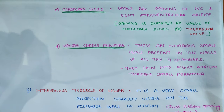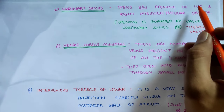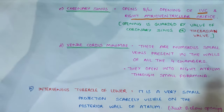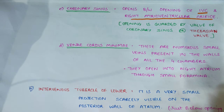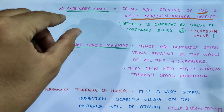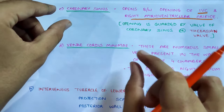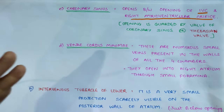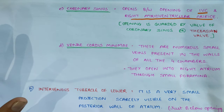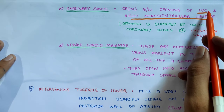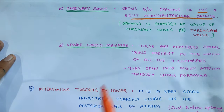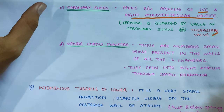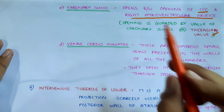Next we have the coronary sinus. The coronary sinus opens between the opening of the inferior vena cava and the right atrioventricular orifice in the smooth posterior part. The IVC valve is called the Eustachian valve, and the coronary sinus valve is called the Thebesian valve, or the valve of the coronary sinus.